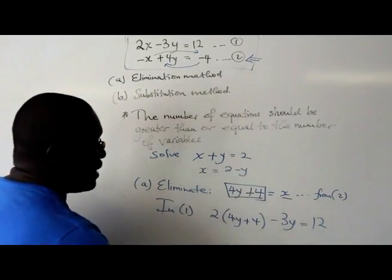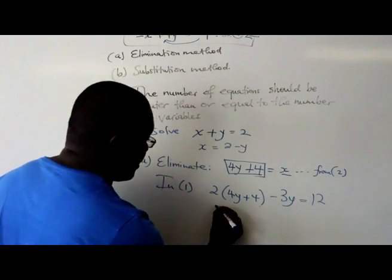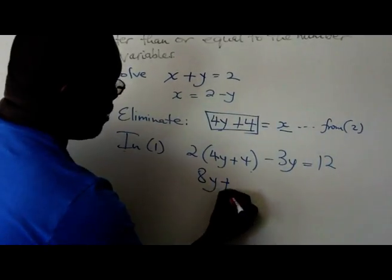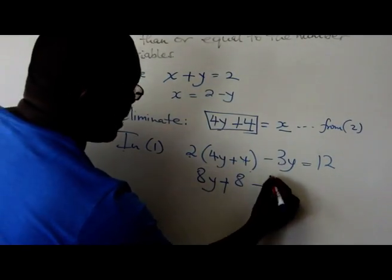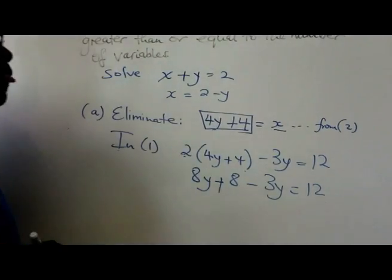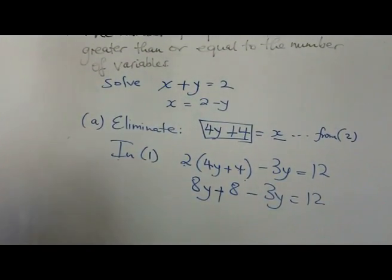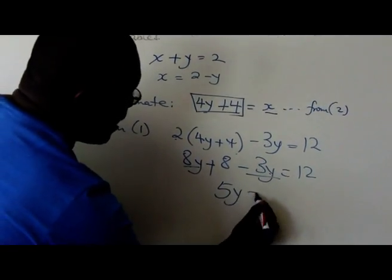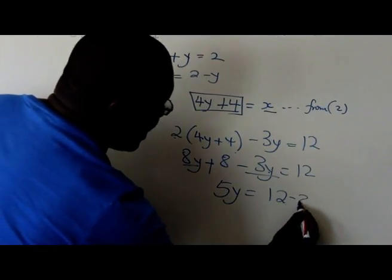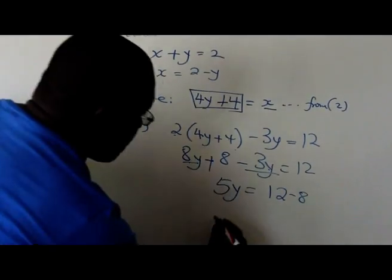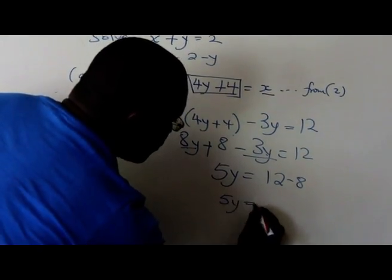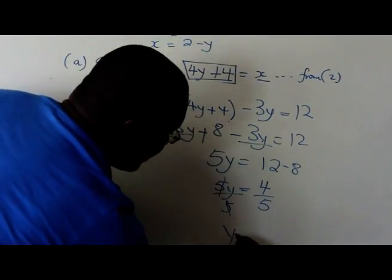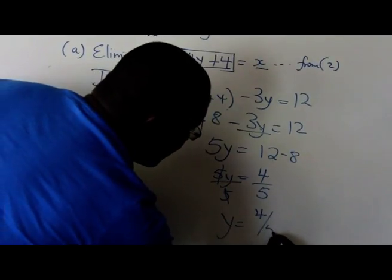Now that I have this, then it's a matter of simplifying and adding and subtracting like terms. So 2 times 4y would be 8y plus 8 minus 3y is equal to 12. So I've removed the brackets. Then the like terms, 8y minus 3y will give me 5y. 12 minus 8 will give me 4. So 5y is equal to 4. Then dividing both sides by 5, y is equal to 4 over 5.